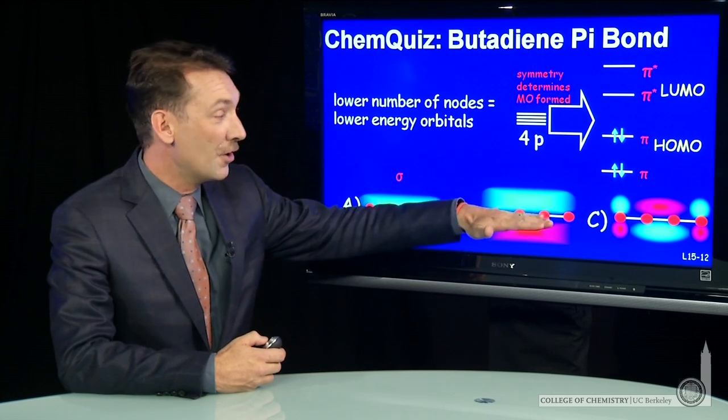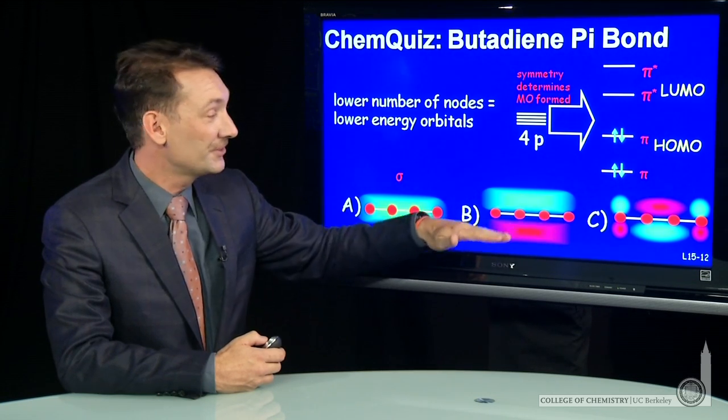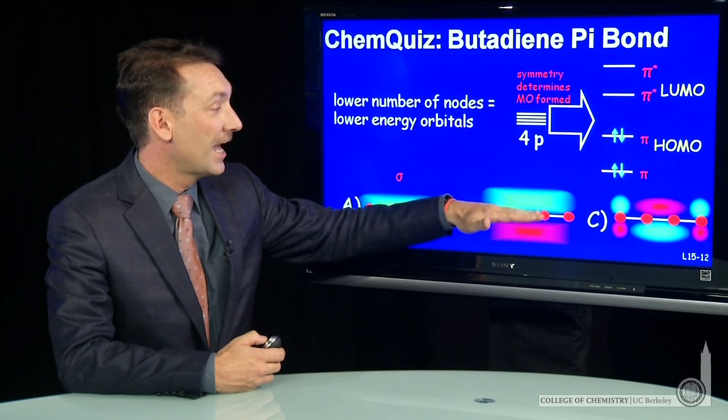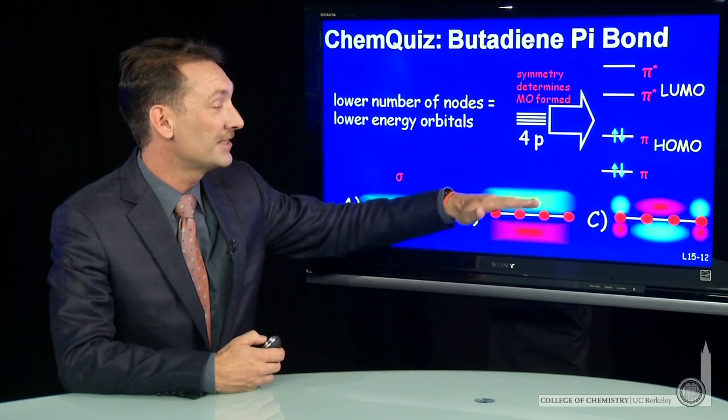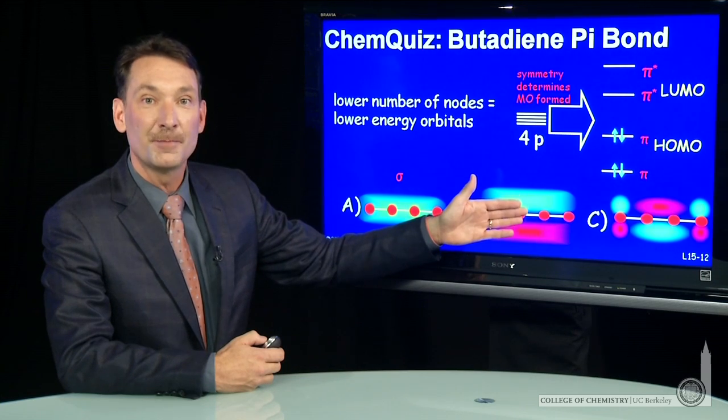This orbital has a node along the internuclear axis, and that's common for pi orbitals. They have internuclear axis nodes, and they have electron density above and below the axis. So this is a pi orbital.